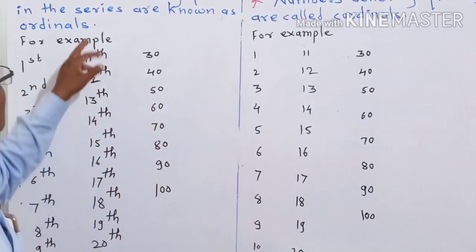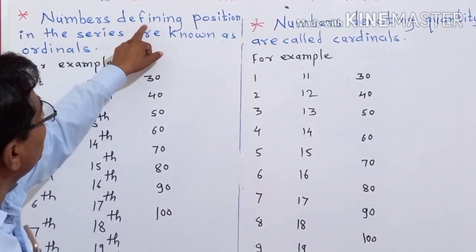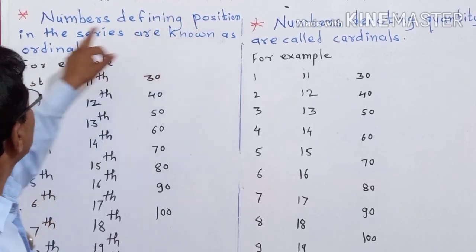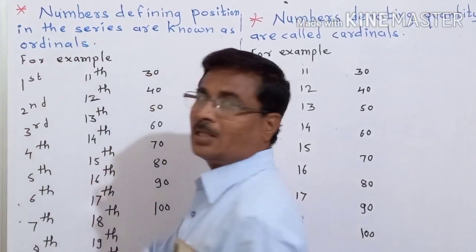Now remember what is ordinal. Ordinals means numbers defining position in the series are known as ordinals. For example...